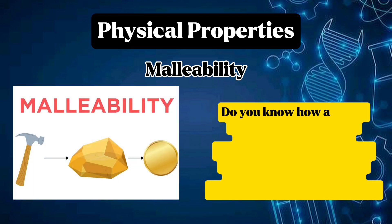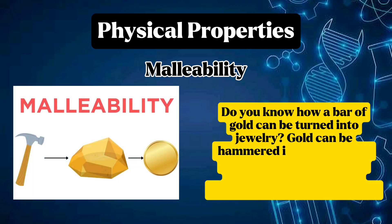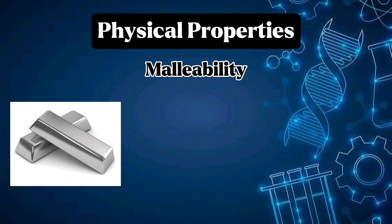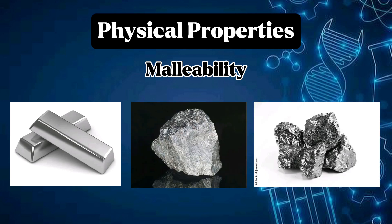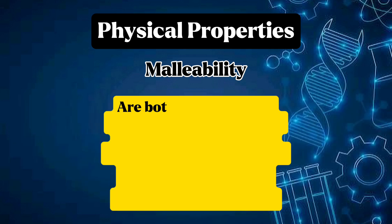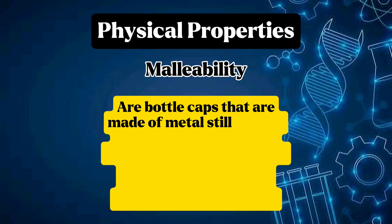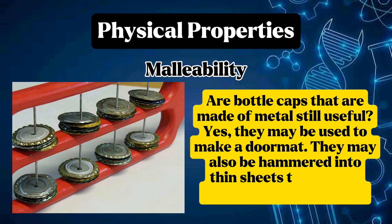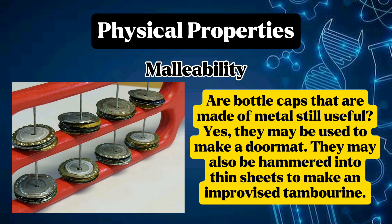Do you know how a bar of gold can be turned into jewelry? Gold can be hammered into flat sheets until the desired shape of jewelry is obtained. This property is called malleability. Silver, iron, and aluminum are examples of malleable materials. Bottle caps made of metal can be hammered into thin sheets to make an improvised tambourine or used to make a doormat.